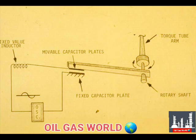This drawing schematically illustrates the capacitance type of rotary shaft position detector. A series LC circuit composed of a fixed inductance and a variable capacitor is electrically connected to the output of an oscillator. In this example, the movable plate moves when the torque tube moves. Assume the circuit is at resonance.